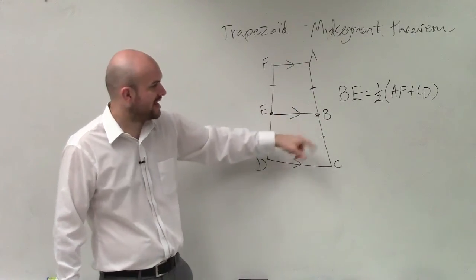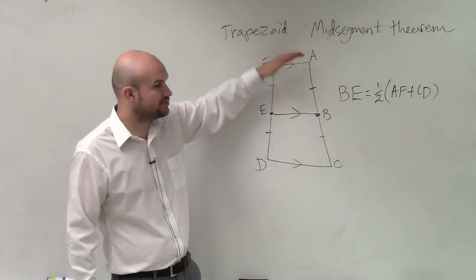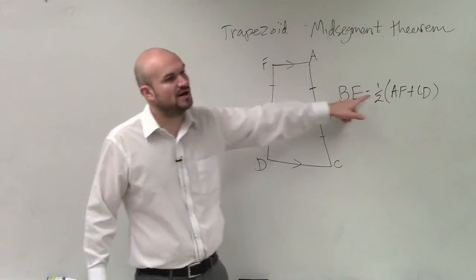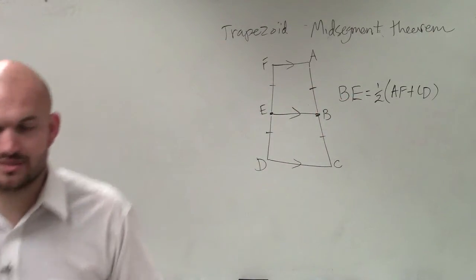then to find the distance of that, you add the sum of the lengths of your two bases and multiply it by one-half, and you'll get the length of your midsegment. I'll give you guys an example in just a second.